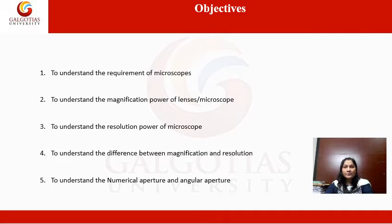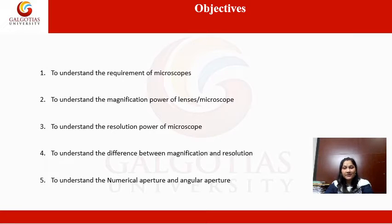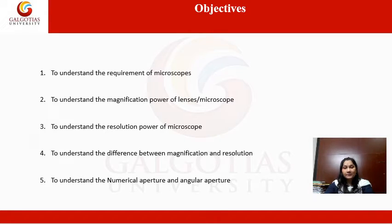The learning objectives of today's lecture are: to understand the requirement of different types of microscopes, to understand the magnification power of lenses or microscope, to understand the resolution power of microscope, to understand the difference between magnification and resolution because both are different from each other, and finally to understand the numerical aperture or angular aperture of the lenses used in microscopes.